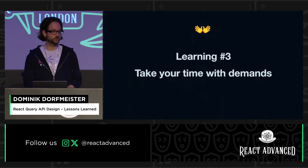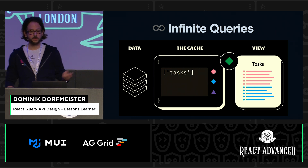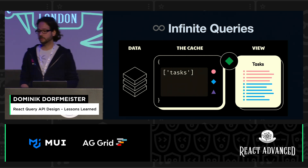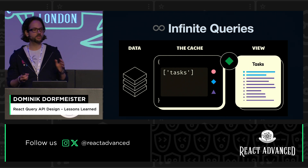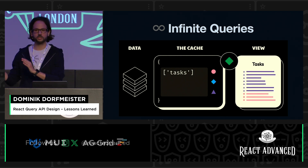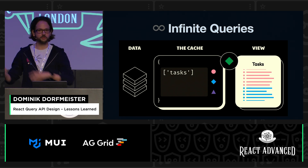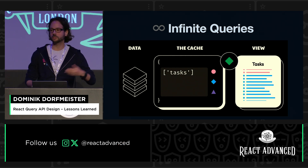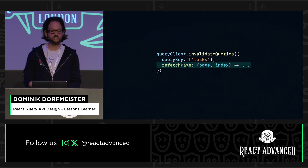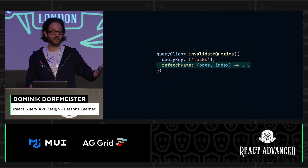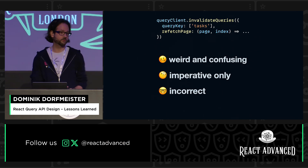One of these things where I got it wrong was the RefetchPage API on our infinite queries. Infinite queries are our way to make doom-scrolling pages relatively easy to implement. Technically, an infinite query is just one cache entry chunked into multiple pages where each page depends on the previous one. That has the effect that when a refetch happens, we refetch all the pages one after the other. Some users complained that they wanted a method where they can refetch just a single page. We thought that's not a bad idea, so we added to invalidateQueries an option to refetch a single page.